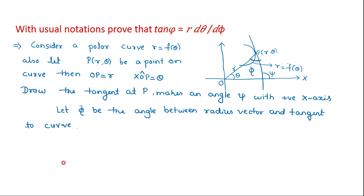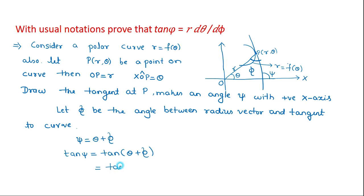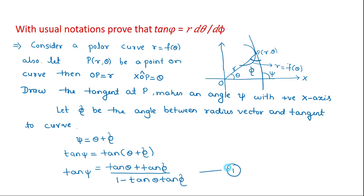From the geometry, we know that the exterior angle is equal to the sum of the interior angles. Here, psi is the exterior angle, and it is equal to the sum of theta plus phi, the interior angles. So psi equals theta plus phi. Taking tan on both sides: tan(psi) equals tan(theta + phi), which by the tan(A+B) formula equals tan(theta) plus tan(phi) divided by 1 minus tan(theta) times tan(phi). This is equation number 1.